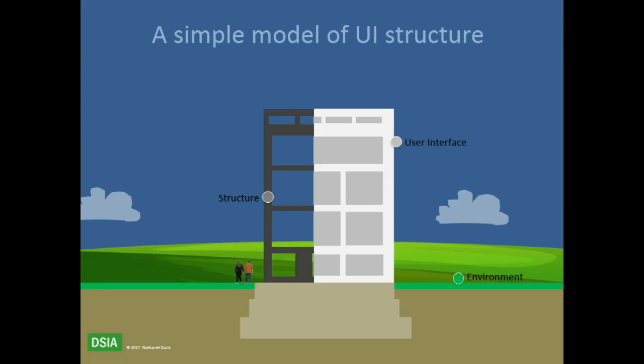It does this by modeling the systemic relationships between the user interface, concepts, content, and data. These are the areas where we're looking to model, because from any strategic or architectural intent this is what we can derive and begin to model.